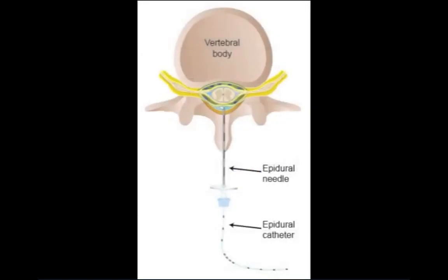In the epidural space, the nerve roots are protected in a myelin sheath as they exit the spinal cord. Local anesthetics in the epidural space must diffuse through the myelin sheath to exert their anesthetic effect. As a result, epidural anesthesia typically has a slower onset and requires five to ten times more anesthetic drug compared with spinal anesthesia.